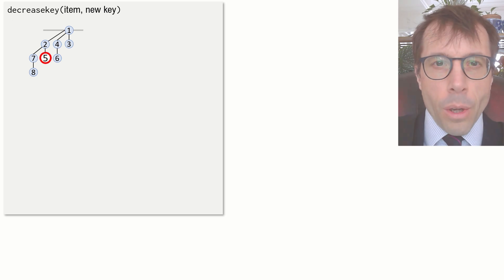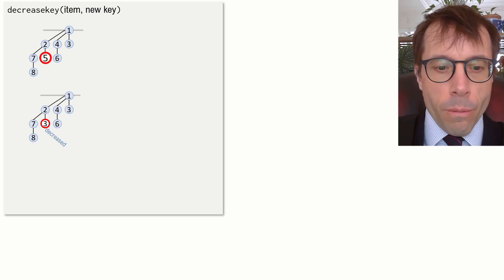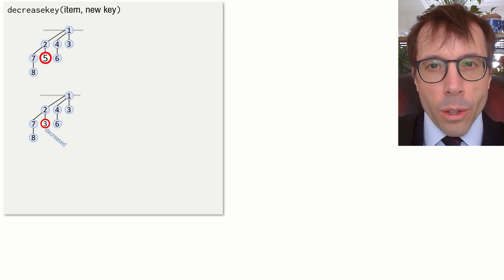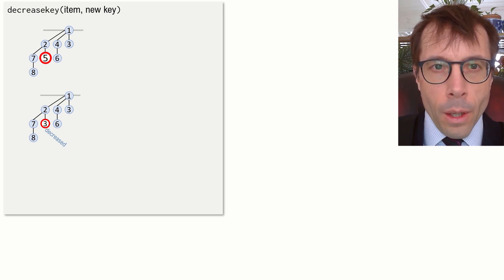Okay, last operation to look at is decrease key, and this is where all the cleverness comes in. If you think back to that table we looked at at the beginning of this video, the table with the complexities of each of the operations, the only place where there was a difference between binomial heap and Fibonacci heap is in decrease key. Here's how it works. Let's suppose we want to decrease this item's key, say, from 5 down to 3. This is perfectly fine. 3 is still larger than its parent, so the heap property still holds, so we don't need to do anything more.